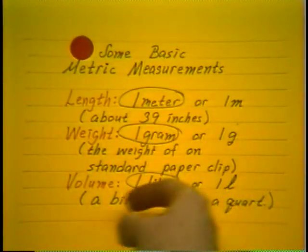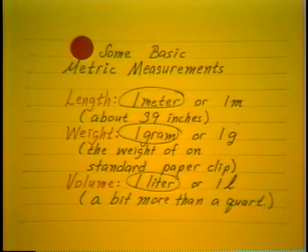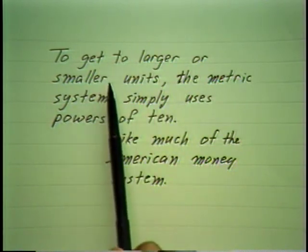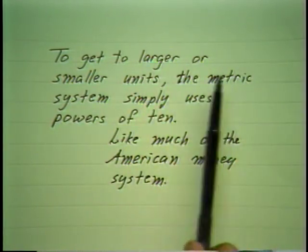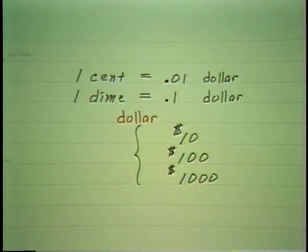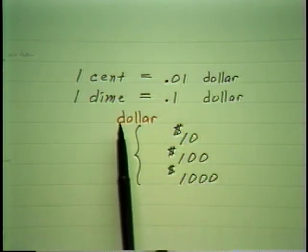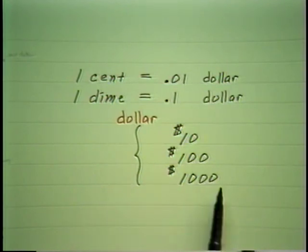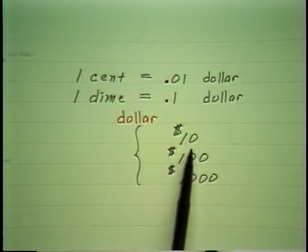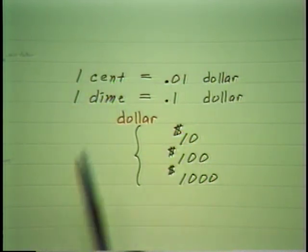Once you get used to working in the metric system, it's a nice system because it works just like our money system or our base 10 number system. To get larger or smaller units, rather than going to different units as the English system does — foot to yards to mile — the metric system simply uses powers of 10, very much like the American money system. We have a cent which is a hundredth of a dollar, a dime which is a tenth of a dollar, then a dollar, then 10 dollars, a hundred dollar bill, a thousand dollar bill. Basically it's a simple base 10 system.